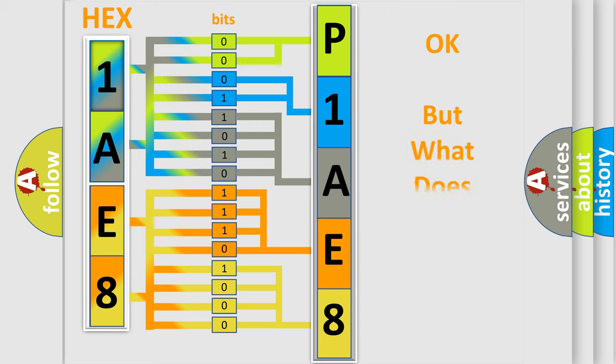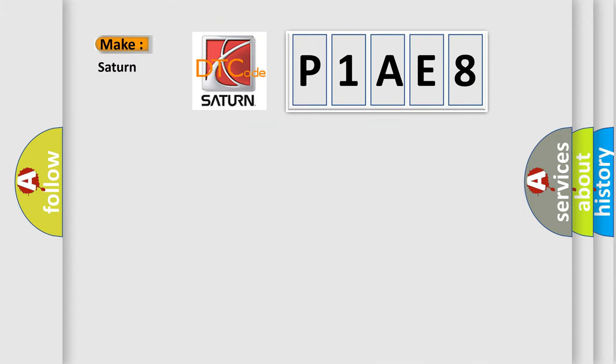The number itself does not make sense to us if we cannot assign information about what it actually expresses. So, what does the diagnostic trouble code P1AE8 interpret specifically for Saturn car manufacturers?